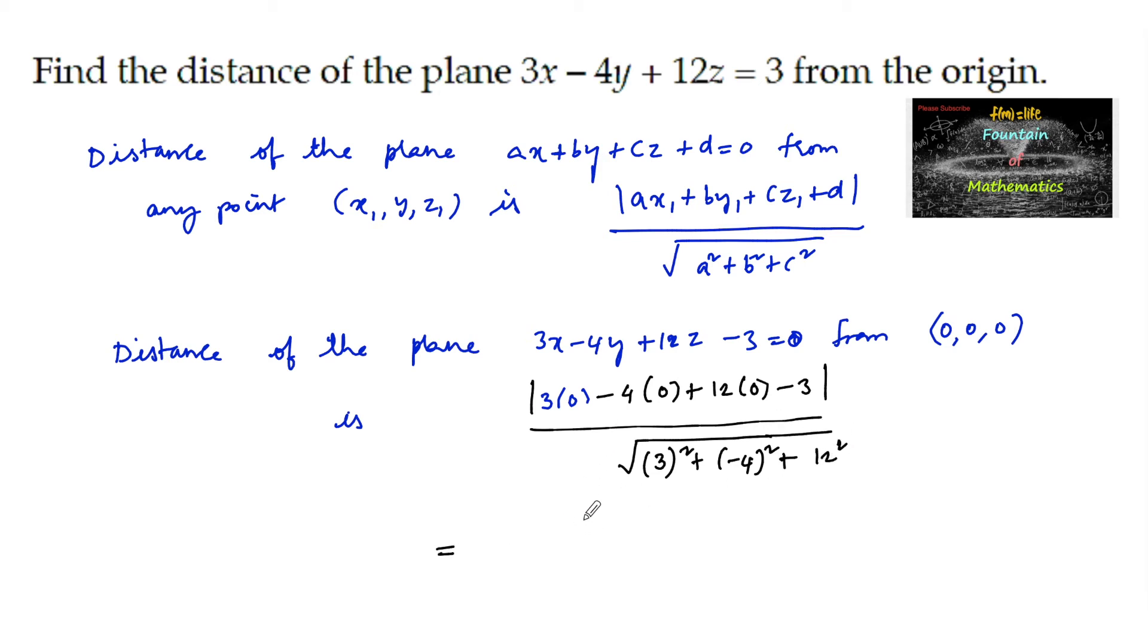Which is equal to the modulus of -3 upon the square root of 9 plus 16 plus 144. So we can write here 3 divided by, and here it comes 144 plus 16 is 169, the square root of 169 is 13, so 3 by 13.